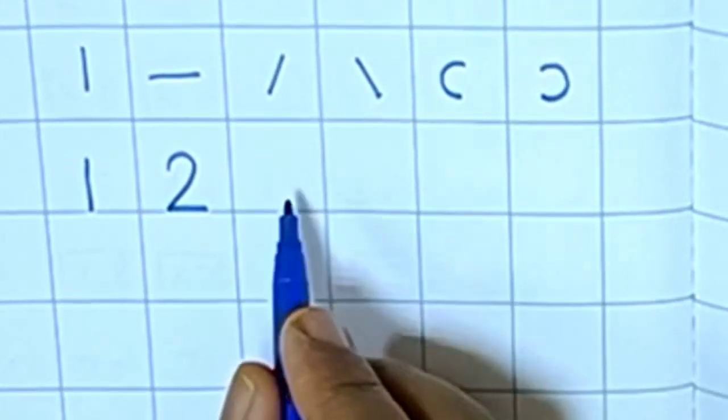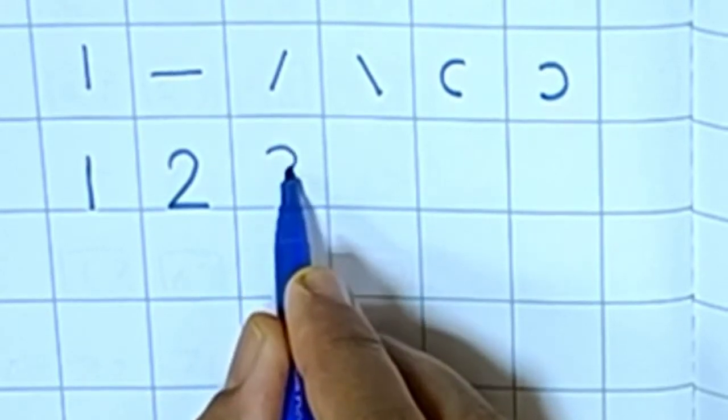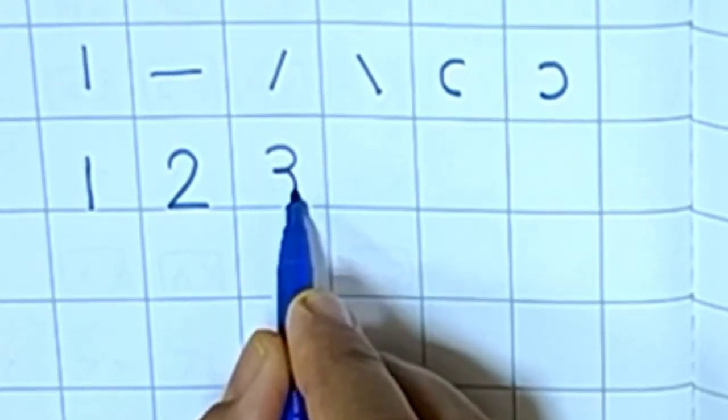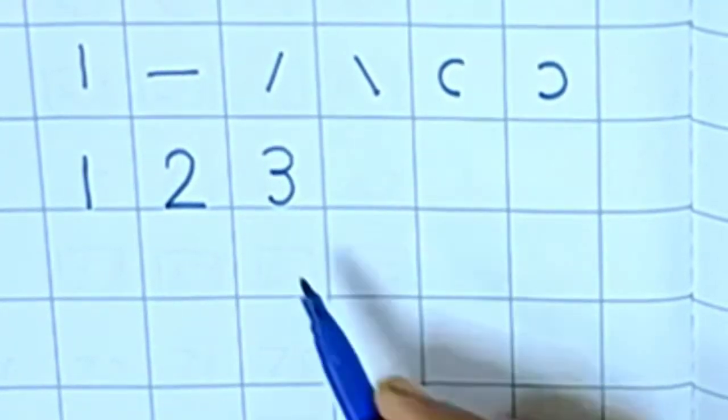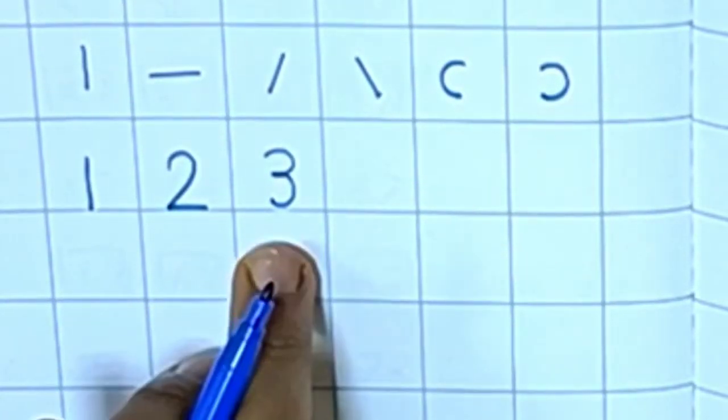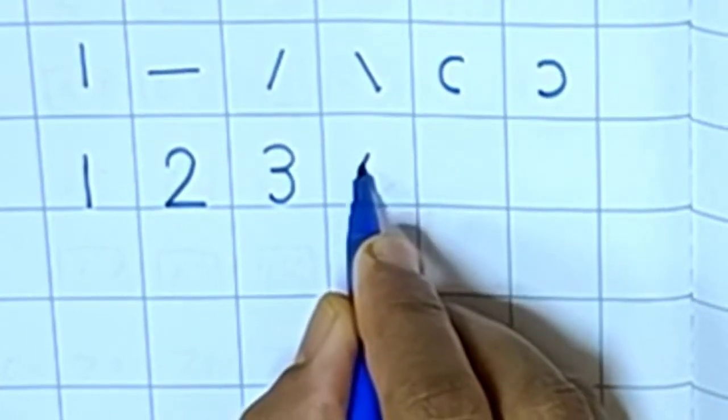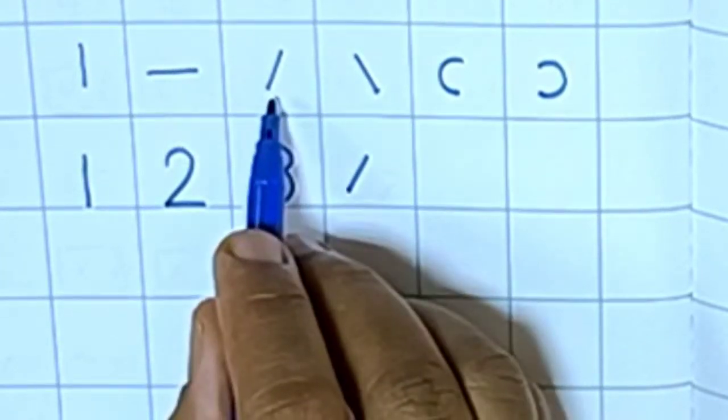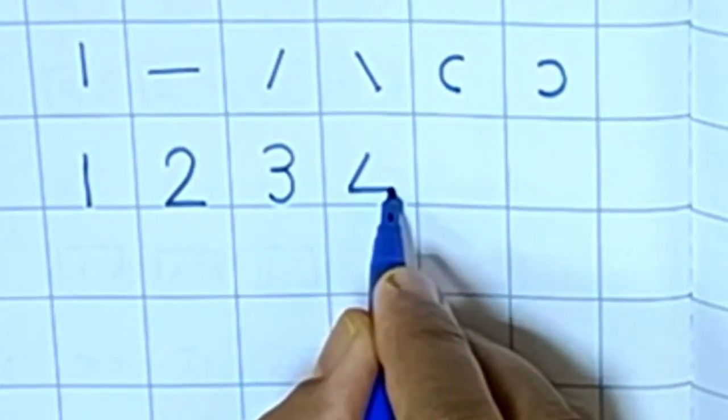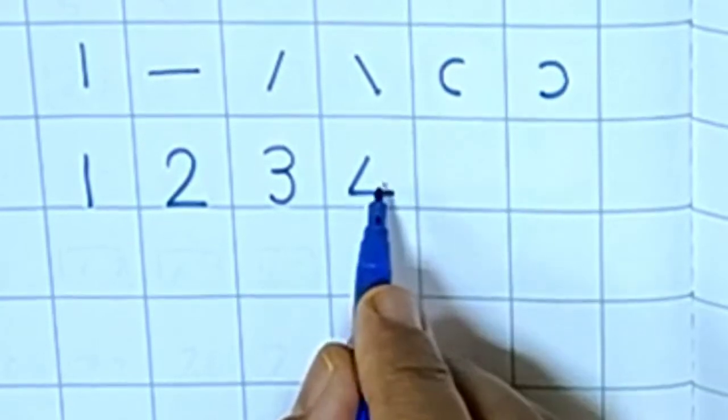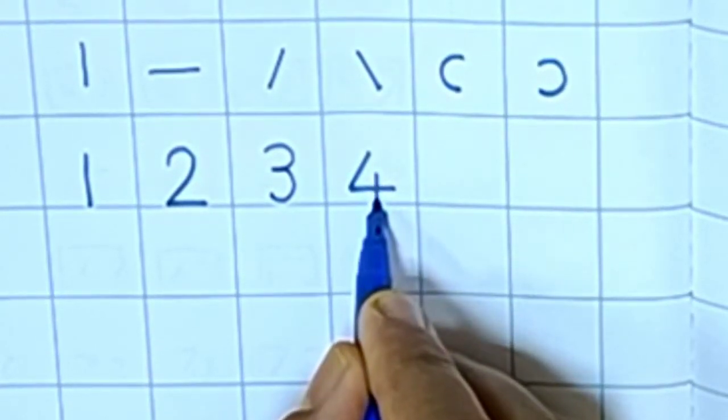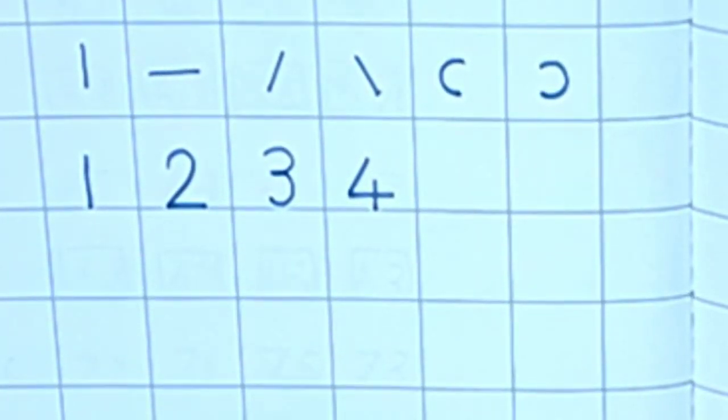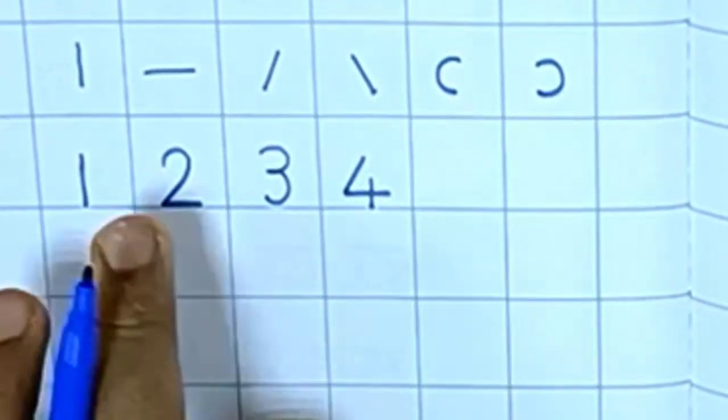Using curves, first curve, then second curve, that is number 3. Okay, then 4. Slanting line, slanting line, then sleeping line, then standing line. This is number 4.